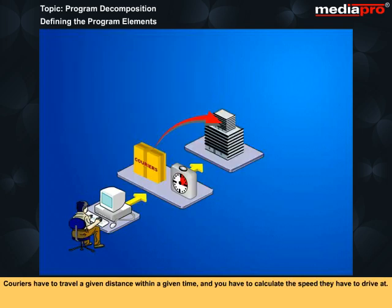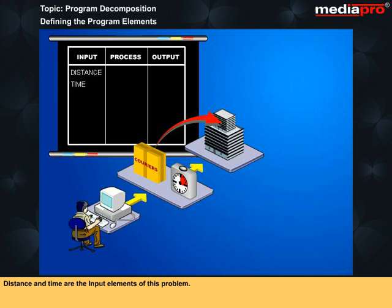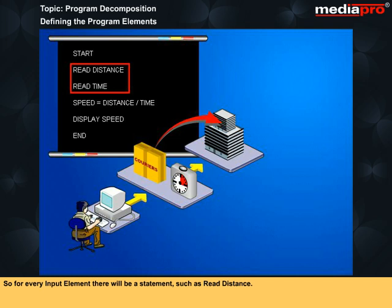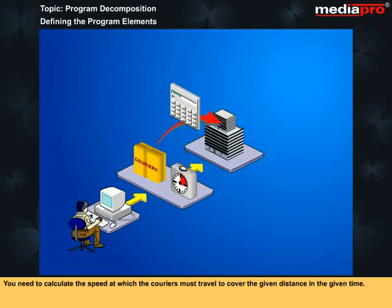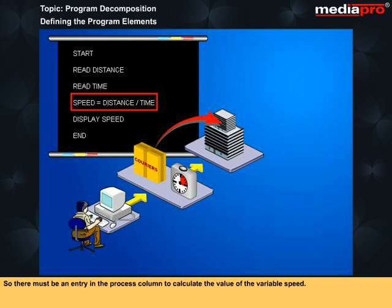Now imagine that you need to solve this problem: Couriers have to travel a given distance within a given time and you have to calculate the speed they have to drive at. Distance and time are the input elements of this problem, and speed is the output element. You need processes to obtain the input elements of the problem. So for every input element there will be a statement such as read distance. The final output element has to be presented to the user. Therefore, the table must contain a process to deliver the output such as display speed. You need to calculate the speed at which the couriers must travel to cover the given distance in the given time. So there must be an entry in the process column to calculate the value of the variable speed.